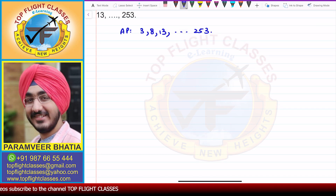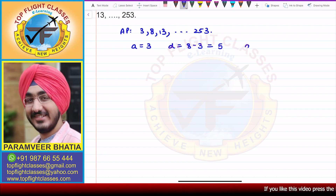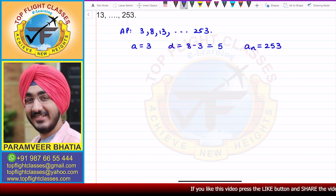Now if we look here, A — that is the first term — is 3. The common difference is the second term minus the first term, that is 8 minus 3, which will be 5. So the common difference is 5. The last term, that is A_N, will be 253.